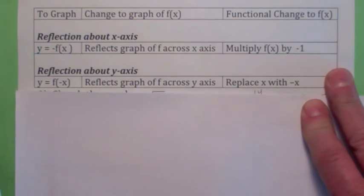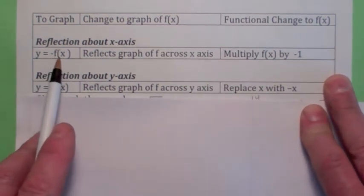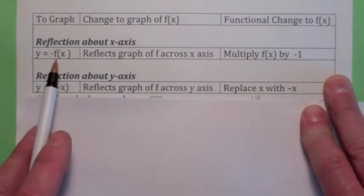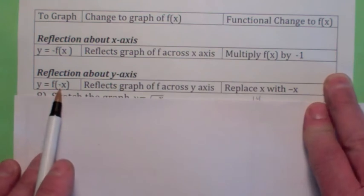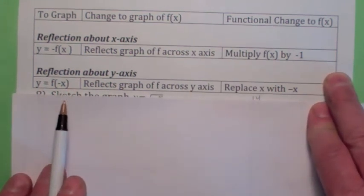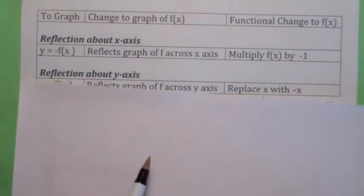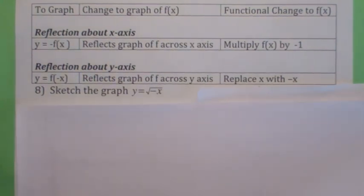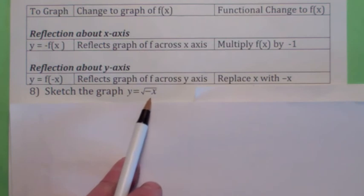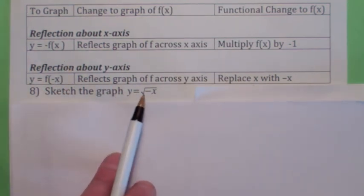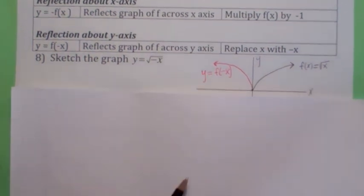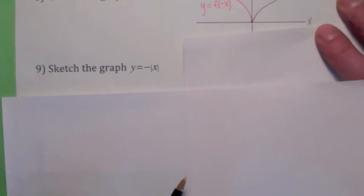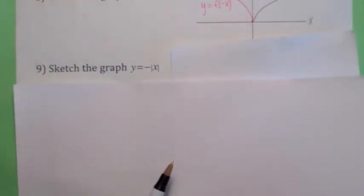The reflections: if you know the graph of f and you multiply the y coordinate by negative 1, that causes a reflection across the x axis — you have to multiply the entire function by negative 1. Don't get that confused with f of negative x, where you replace x with negative x — that causes a reflection across the y axis. For example, the square root of negative x replaces x with negative x, so that's a reflection across the y axis. And negative absolute value of x multiplies the y coordinate by negative 1 — that's a reflection across the x axis.